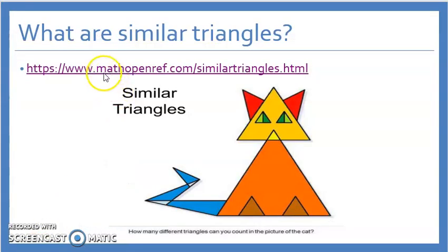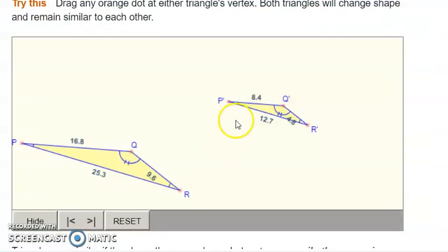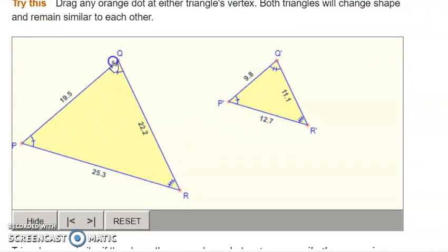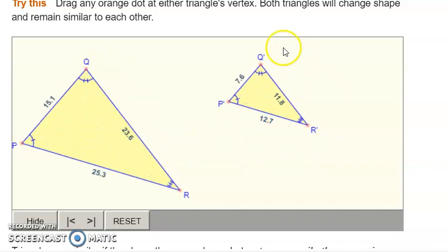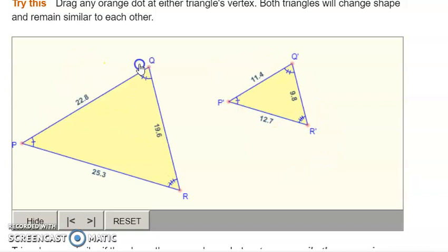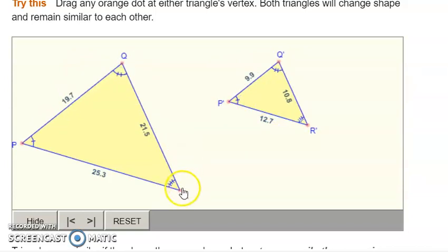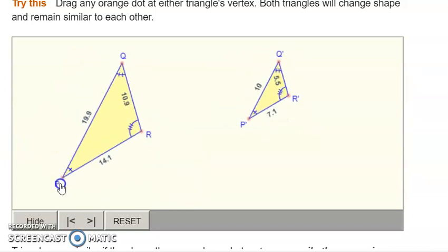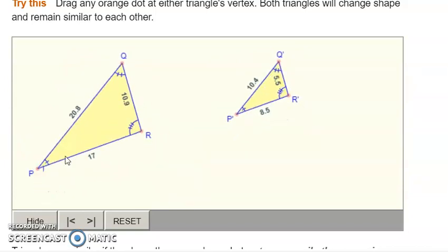You can also visit this website to see more similar triangles. These are two similar triangles. You can change the shape of this triangle in the way you want, and this triangle will automatically be changed in the same way, so they'll stay similar triangles. As you can notice, they have exactly the same shape.